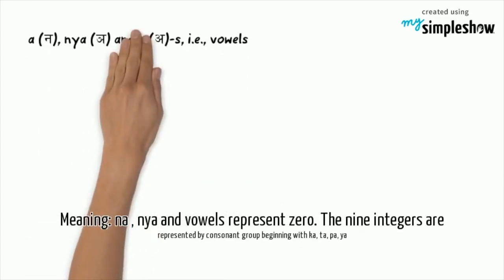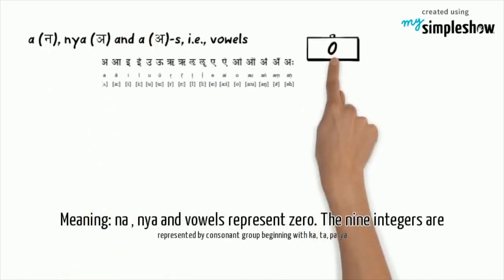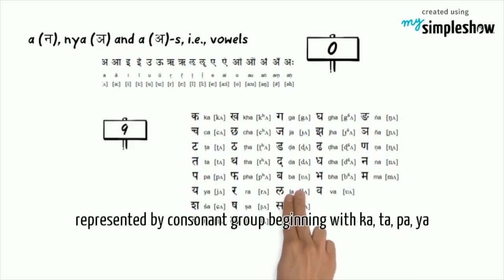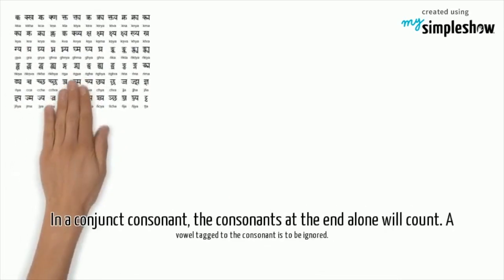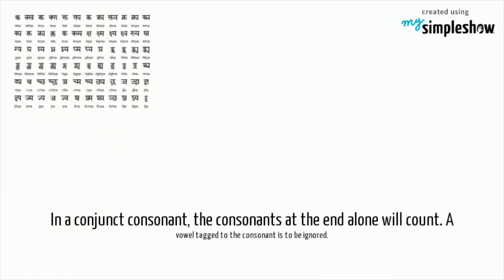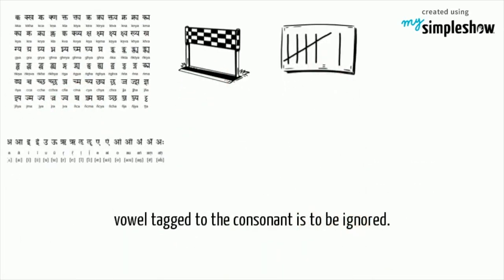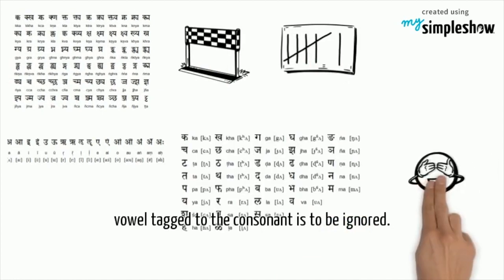Meaning: Na, Nya, and vowels represent zero. The nine integers are represented by consonant groups beginning with Kata, Pa, and Ya. In a conjunct consonant, the consonant at the end alone will count. A vowel tied to the consonant is to be ignored.